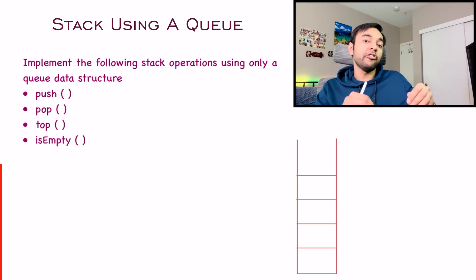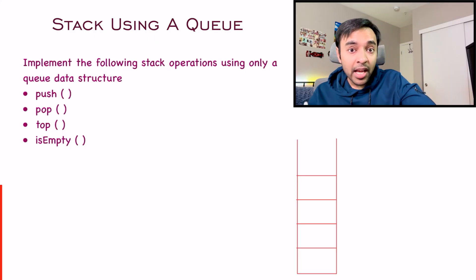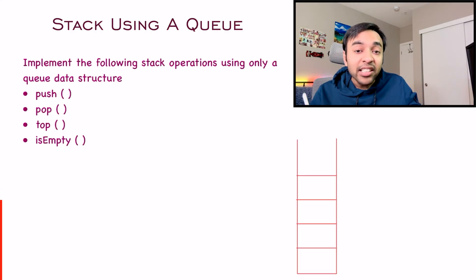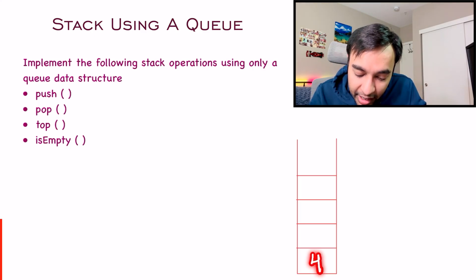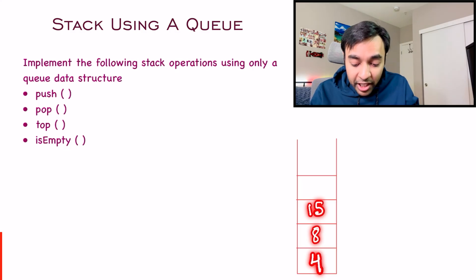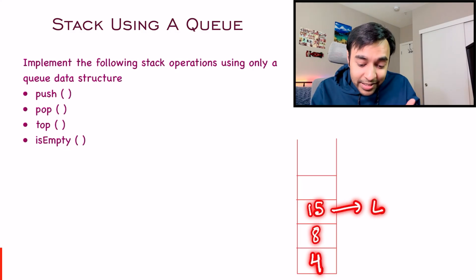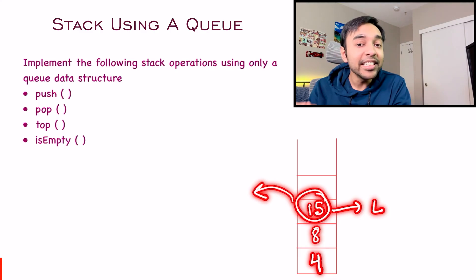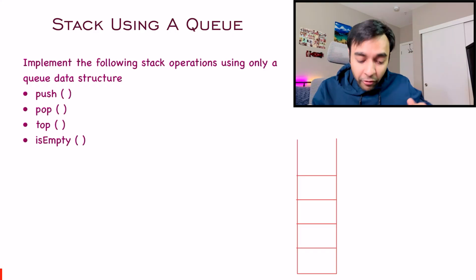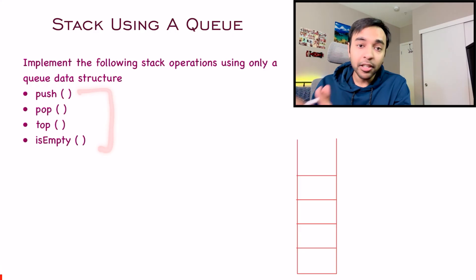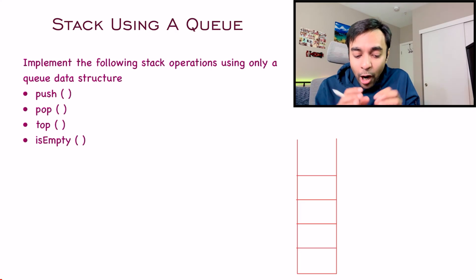A queue is simply like standing in a line — the first person who comes in is the first one to get served. But in a stack data structure, it is last in first out. If you have elements 4, 8, and then 15, then 15 comes in last, so when you pop an element, 15 is the first one to get out. This is the last in first out policy. You have to perform all stack operations using the queue data structure.